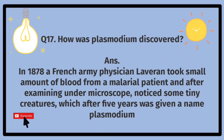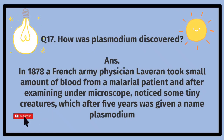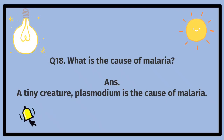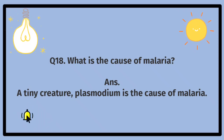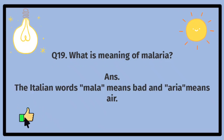Plasmodium kaise daryaft hua? What is the cause of malaria? A tiny creature, Plasmodium, is the cause of malaria. Malaria ki wajah kiya hai. Ek choti si makhluq, Plasmodium, malaria ki wajah hai. What is the meaning of malaria? The Italian words: mala means bad and aria means air. Malaria ka kya matlab hai. Italvi alfaaz: mala ka matlab hai bura aur aria ka matlab hawa hai.